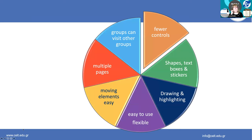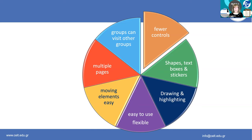I find Jamboard very useful, first of all, because there are fewer controls. The basic functions — you can make shapes, you can make text boxes, you can have stickers. And also you can draw and highlight, and there's also a pointer. These are in Zoom as well, but they're much more easy to access on a Jamboard and they're easier to use. They're more flexible. Moving elements on the Jamboard itself is quite easy. And one of the things I really love about it is that you can open a Jam — or whatever they call it — and it works like a booklet. You can have multiple pages. You can add your whole lesson in. It's like having a PowerPoint online.